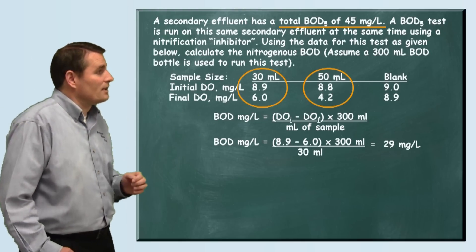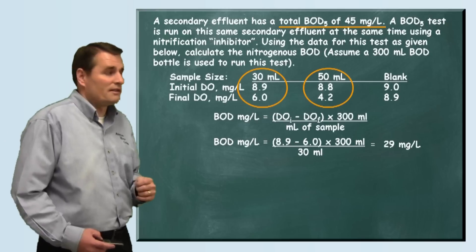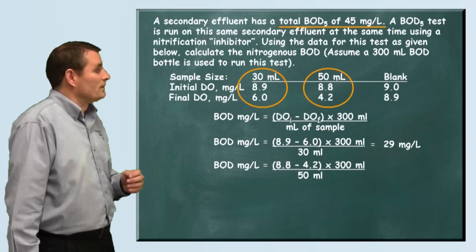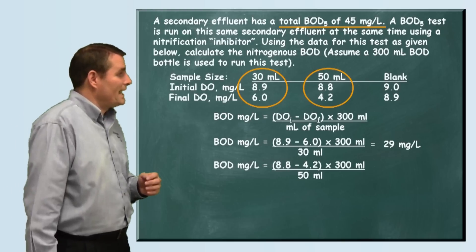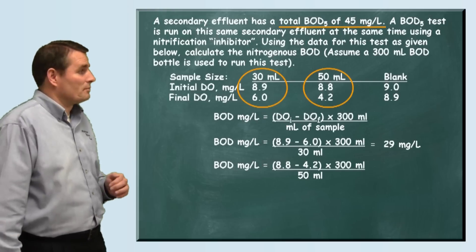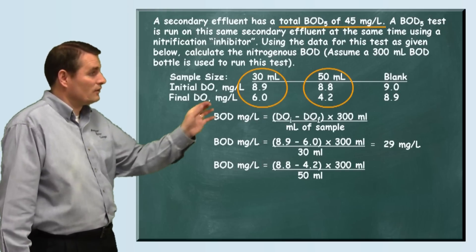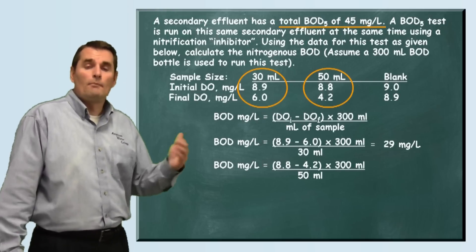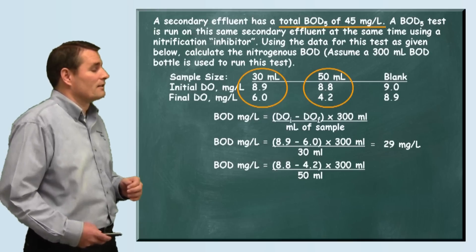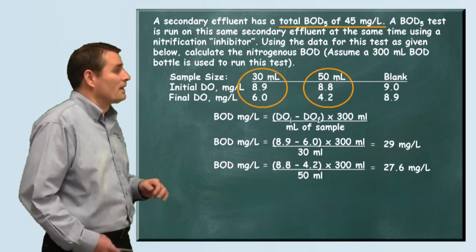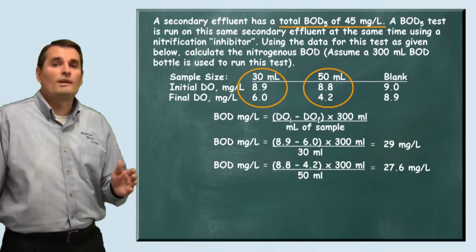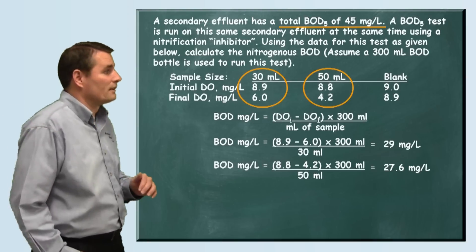Now we need to do the other sample — the 50 milliliter sample. The initial dissolved oxygen was 8.8 milligrams per liter, and then the final was 4.2 milligrams per liter. So we take the difference of those two, multiply by 300, and then divide by the 50 milliliter sample size. When we do that, we see that this BOD was 27.6 milligrams per liter.